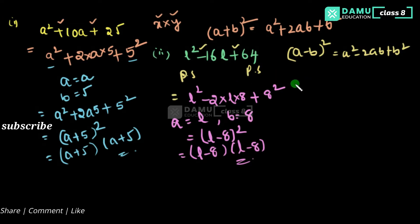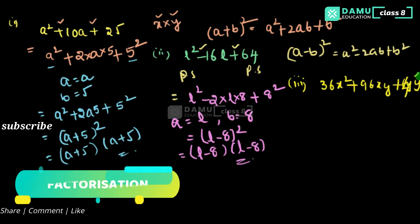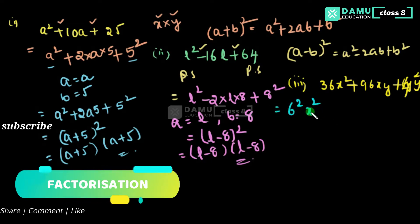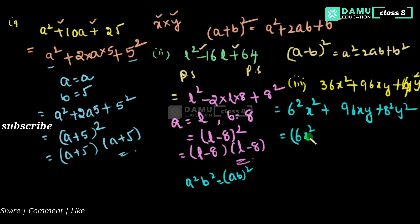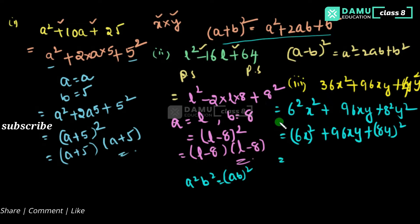Third question: 36x squared plus 96xy plus 64y squared. We can write 36 as 6 squared, so 36x squared becomes (6x) whole square. And 64y squared can be written as (8y) whole square. Since both signs are plus, this is definitely the (a + b) whole square formula.